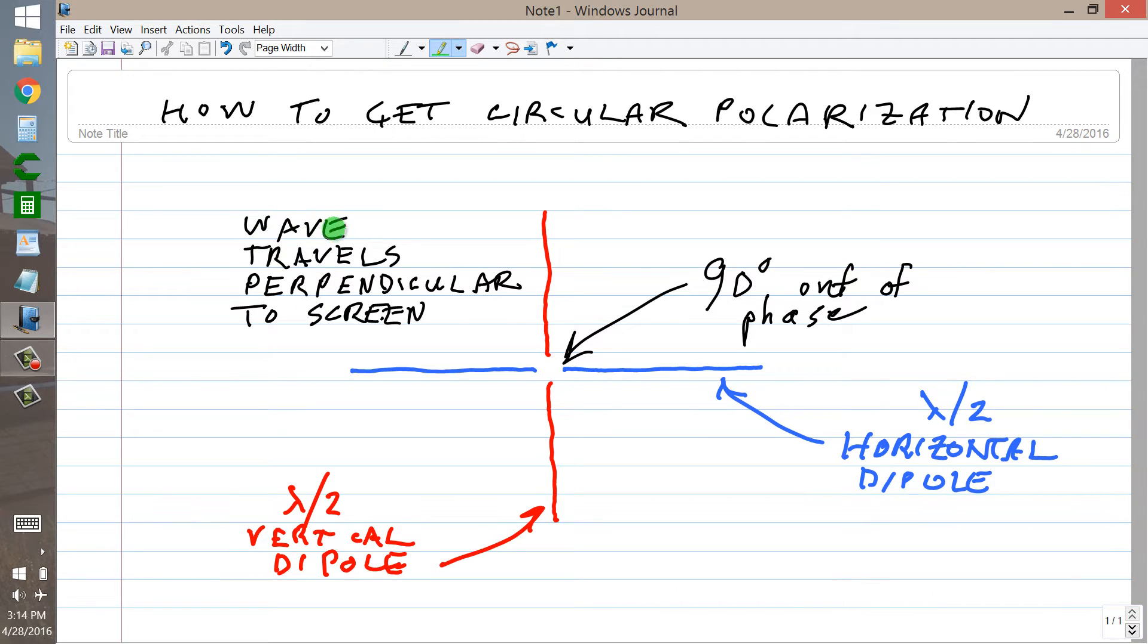But in either case, the electromagnetic wave produced by these antennas will be perpendicular to the screen and will have circular polarization. It is important, though, that they be fed 90 degrees out of phase.